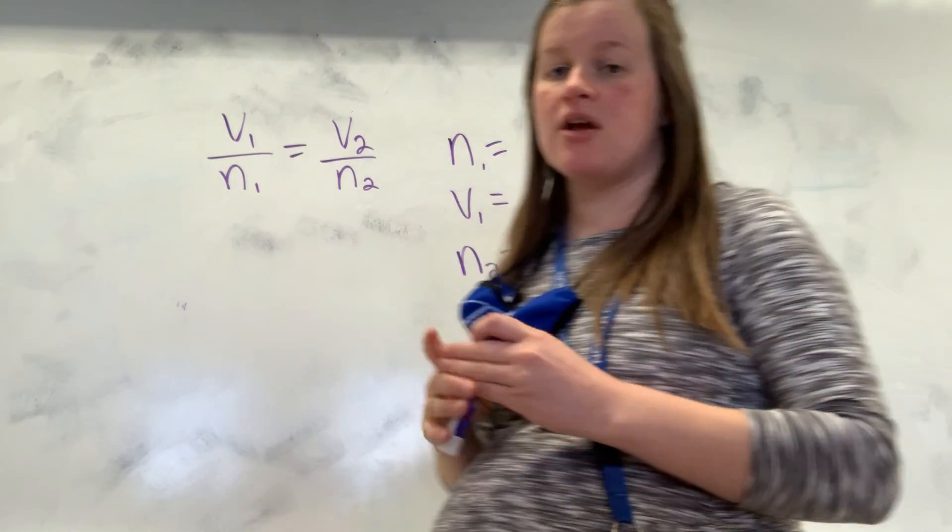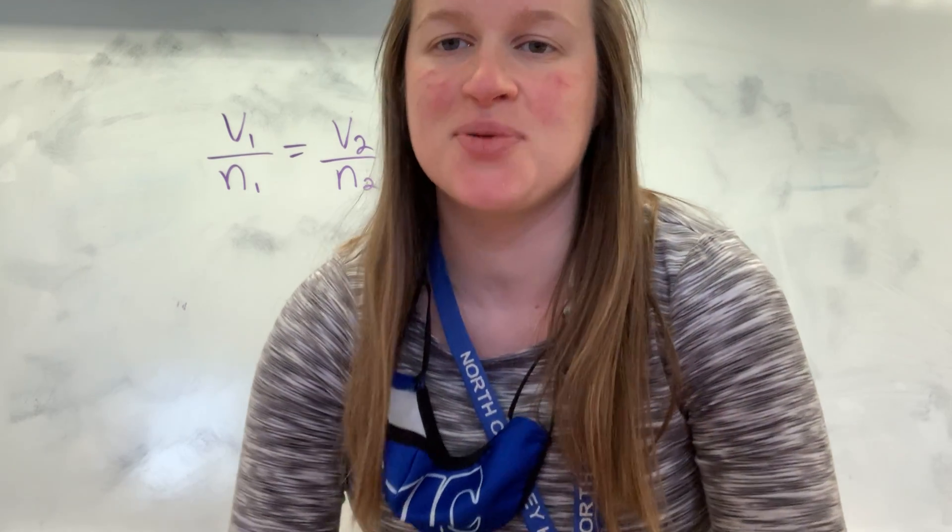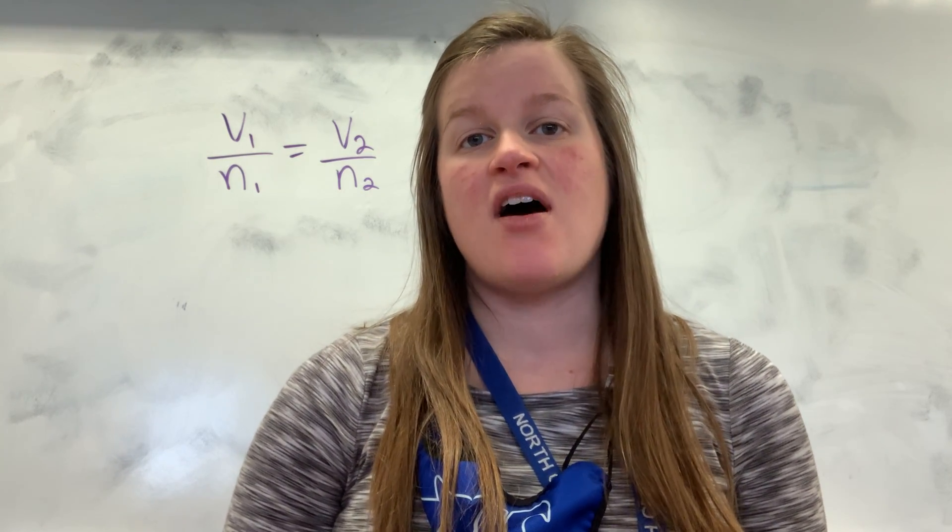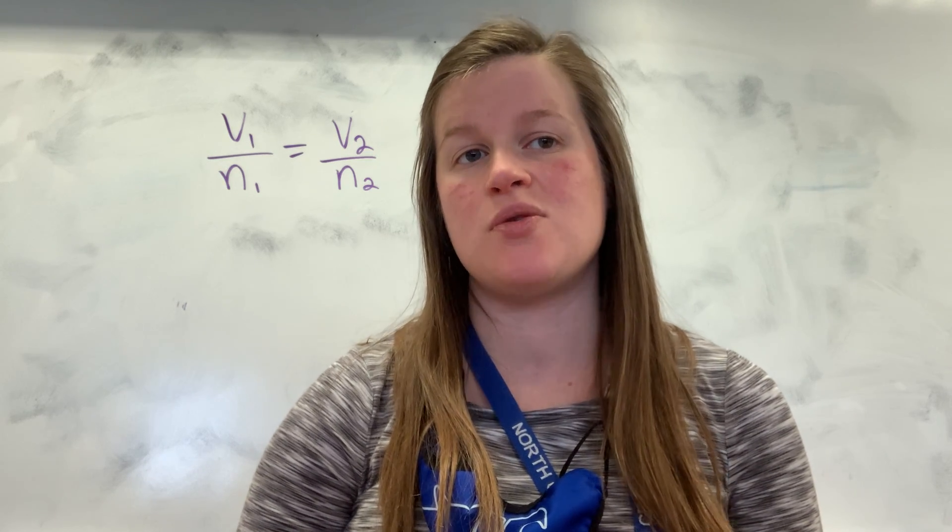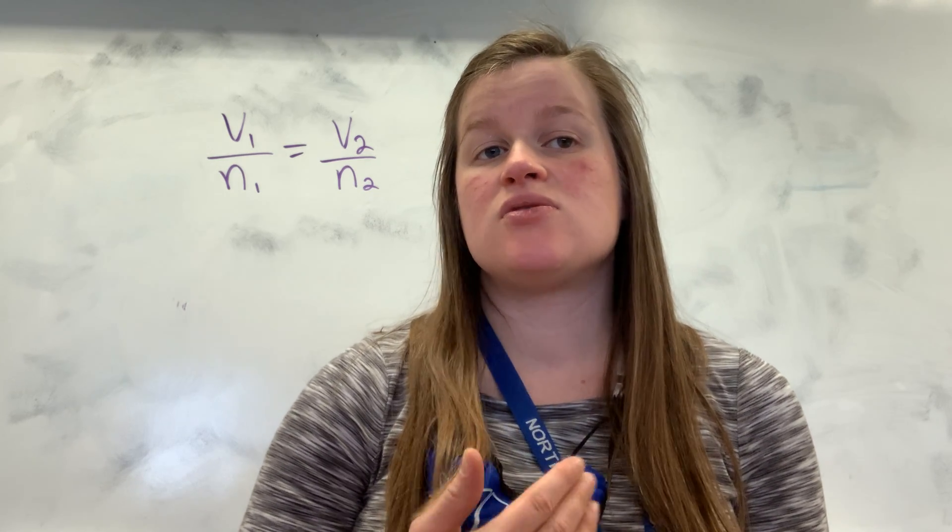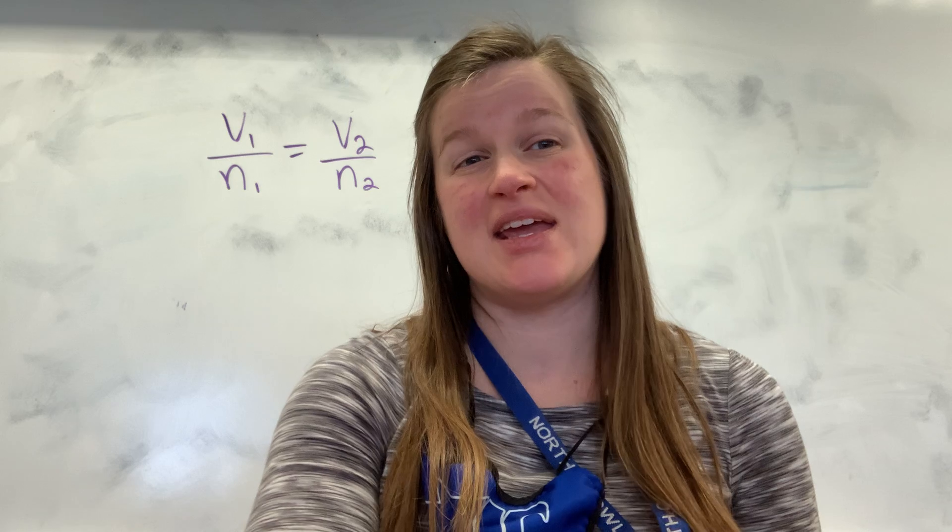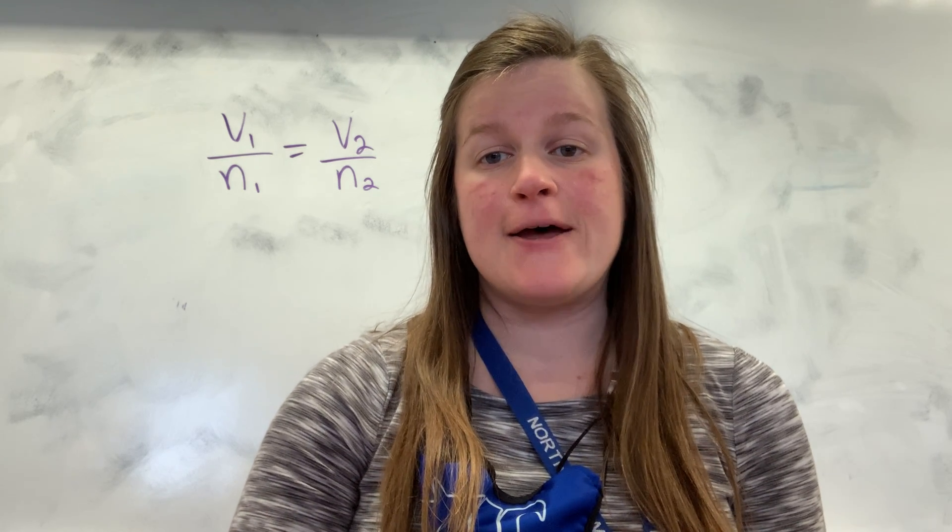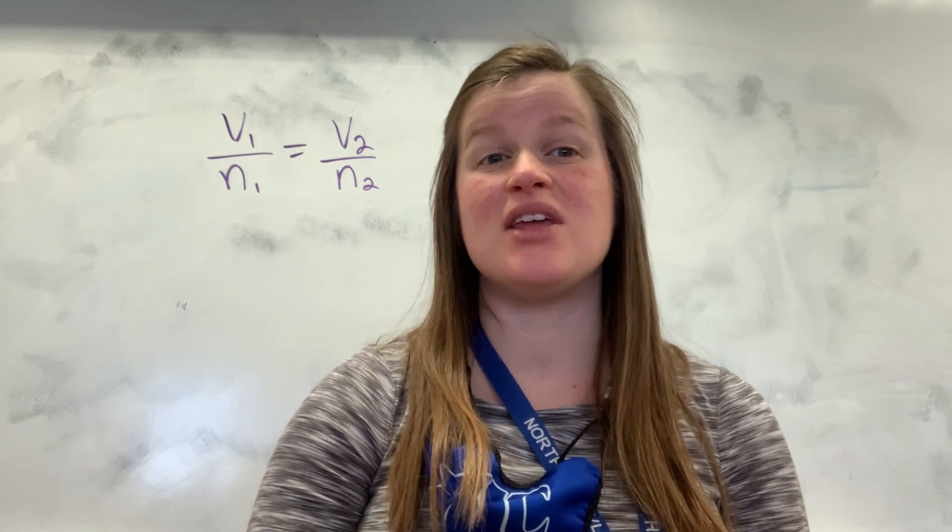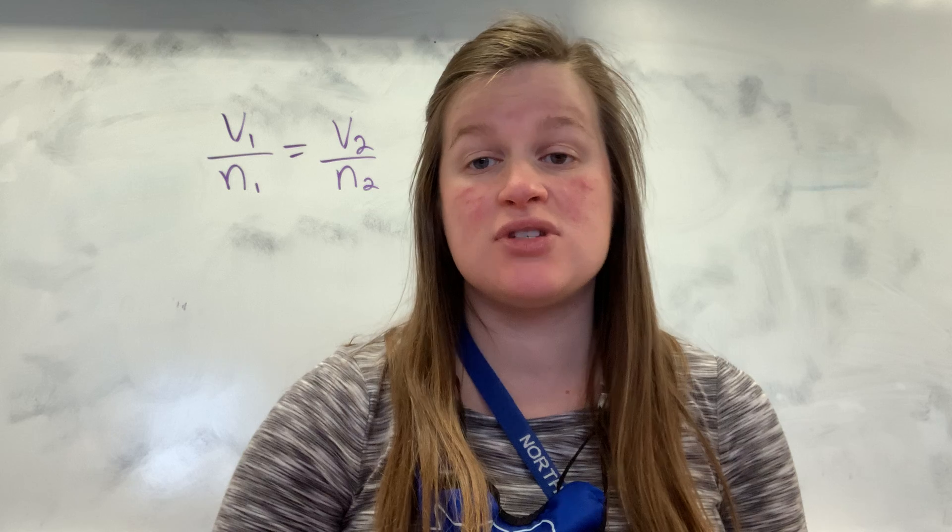But we'll leave our variables and our equation up there. So the second example in your note says a 12.2 liter container holds oxygen gas at STP. If all of the oxygen is converted to O3, so that's ozone, under the same conditions, what will be the volume of the O3 formed? And so we have 12.2 liters of a gas.